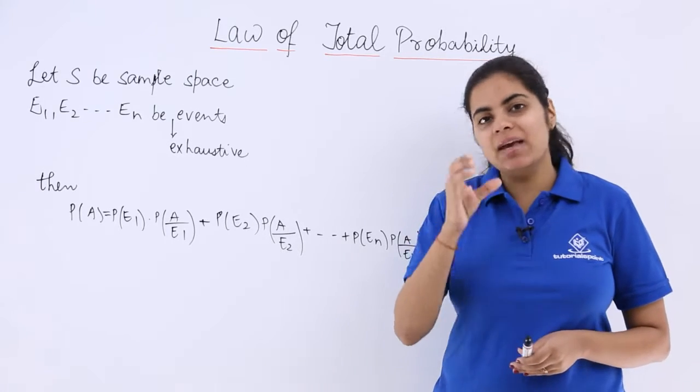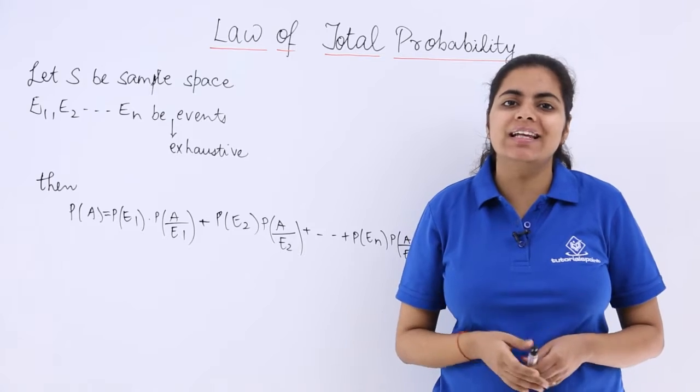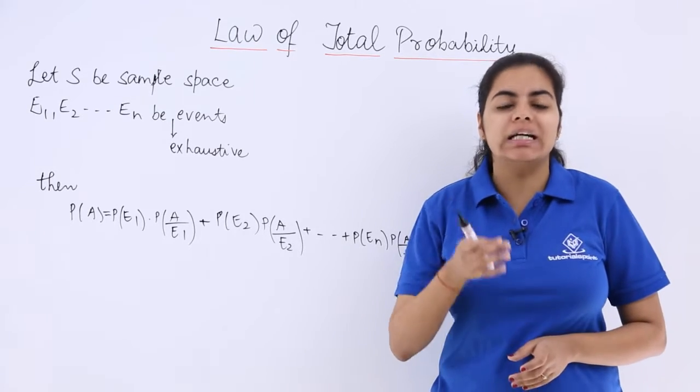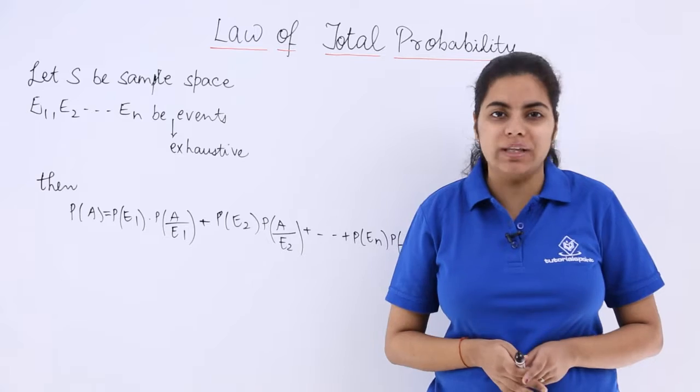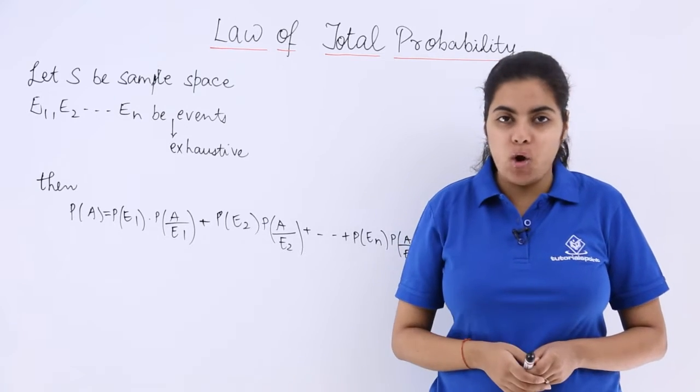Let A be an event which can occur in n different ways. We will be adopting a tree diagram to solve questions related to the law of total probability.